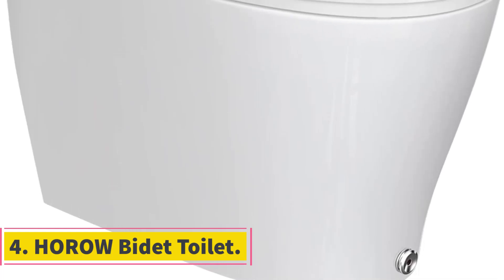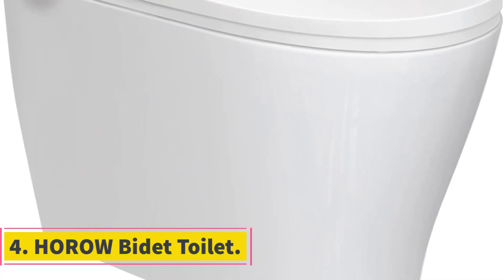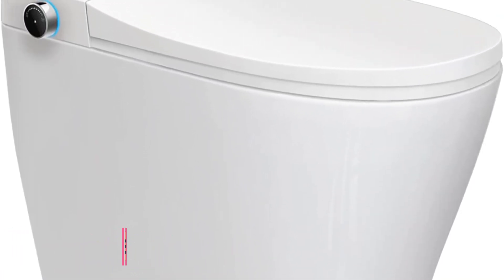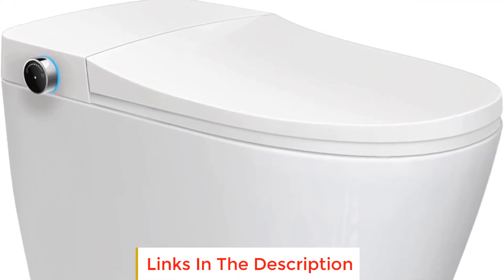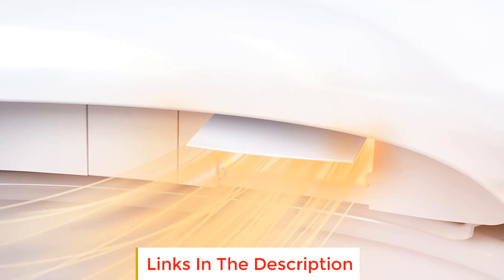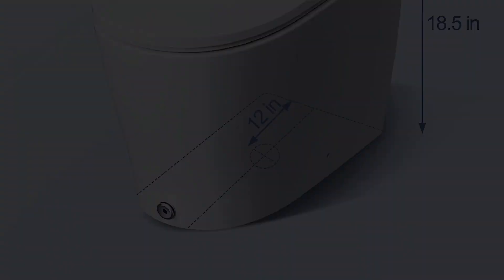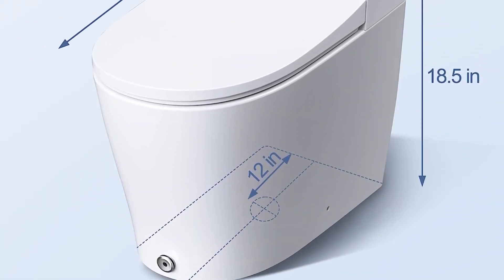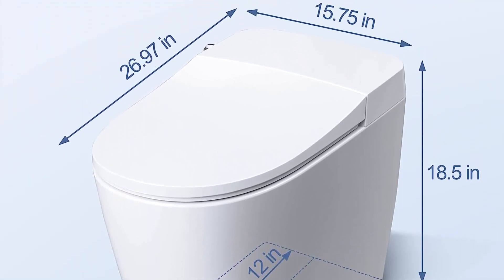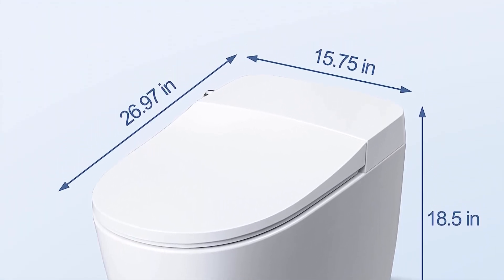Number 4. Horo Bidet Toilet. The Horo Bidet Toilet is an advanced and innovative smart toilet that offers a range of features designed to provide a luxurious and comfortable bathroom experience. This high-power flush toilet boasts a powerful flushing capacity, capable of effectively flushing away stains in a single go. Additionally, its water consumption is environmentally friendly, with a low 1.03 gallons per flush GPF, making it an efficient choice that helps conserve water.